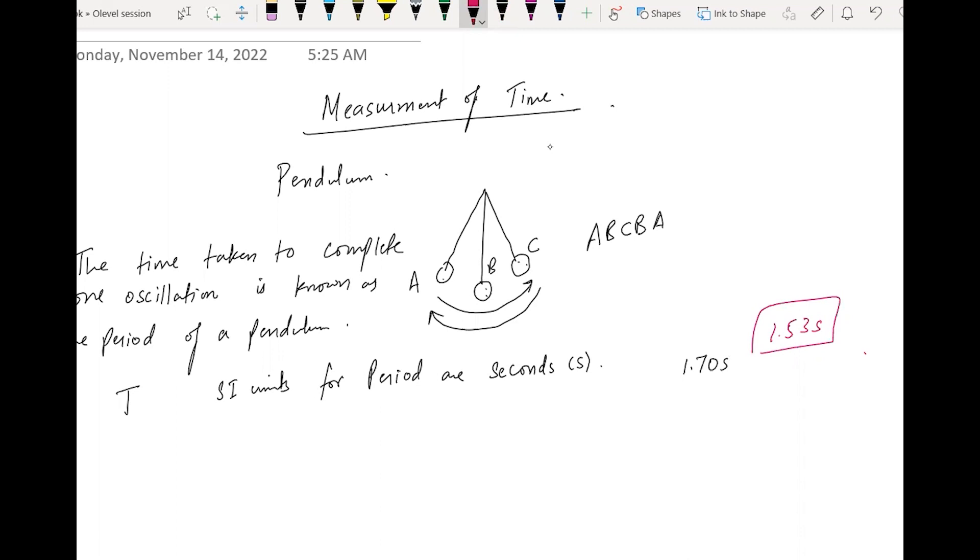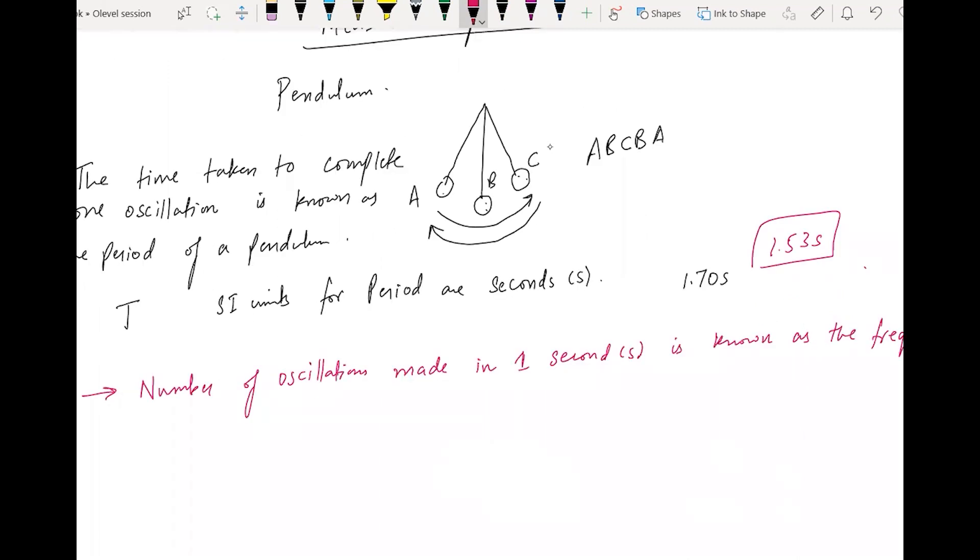This is the number of oscillations made in one second, or frequency, that we denote by f equals one over capital T. You can also write it like this: T equals one over f.